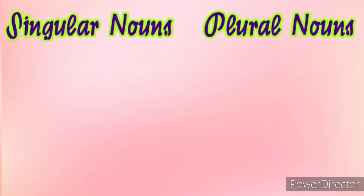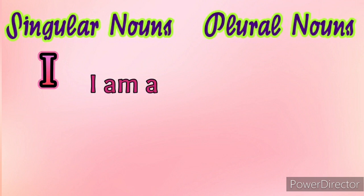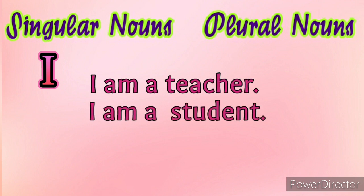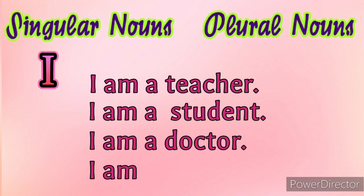Let's know how to use these words for singular nouns and plural nouns. 'I' is used in the place of singular nouns. Instead of telling your name, you can say: I am a teacher, I am a student, I am a doctor, I am a lawyer.